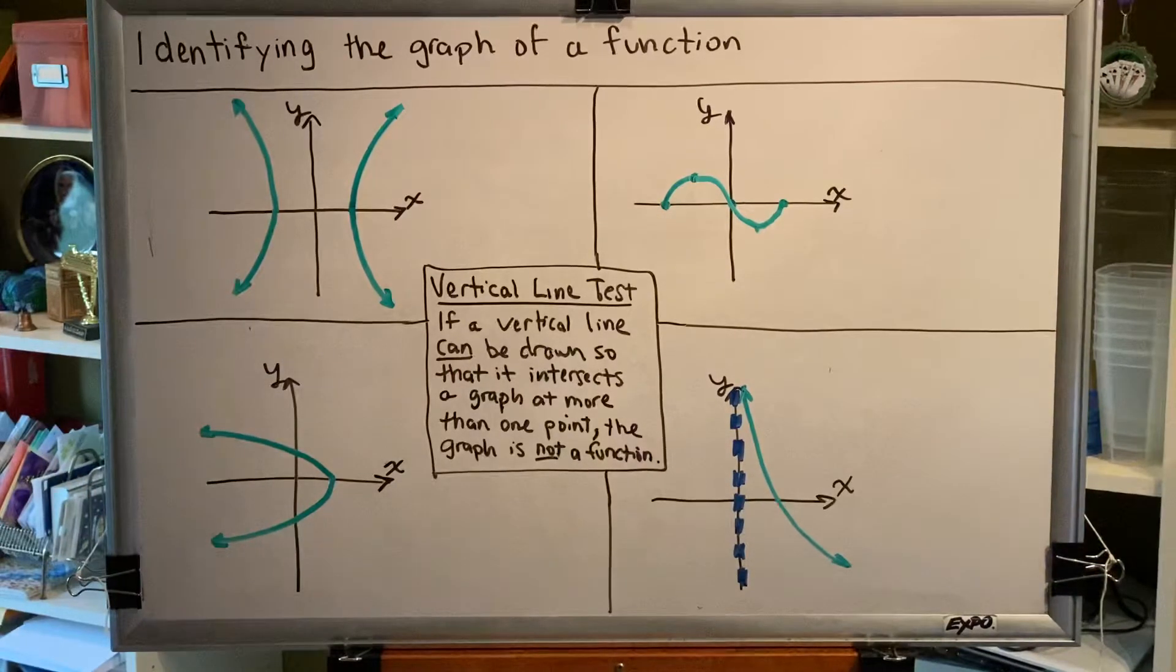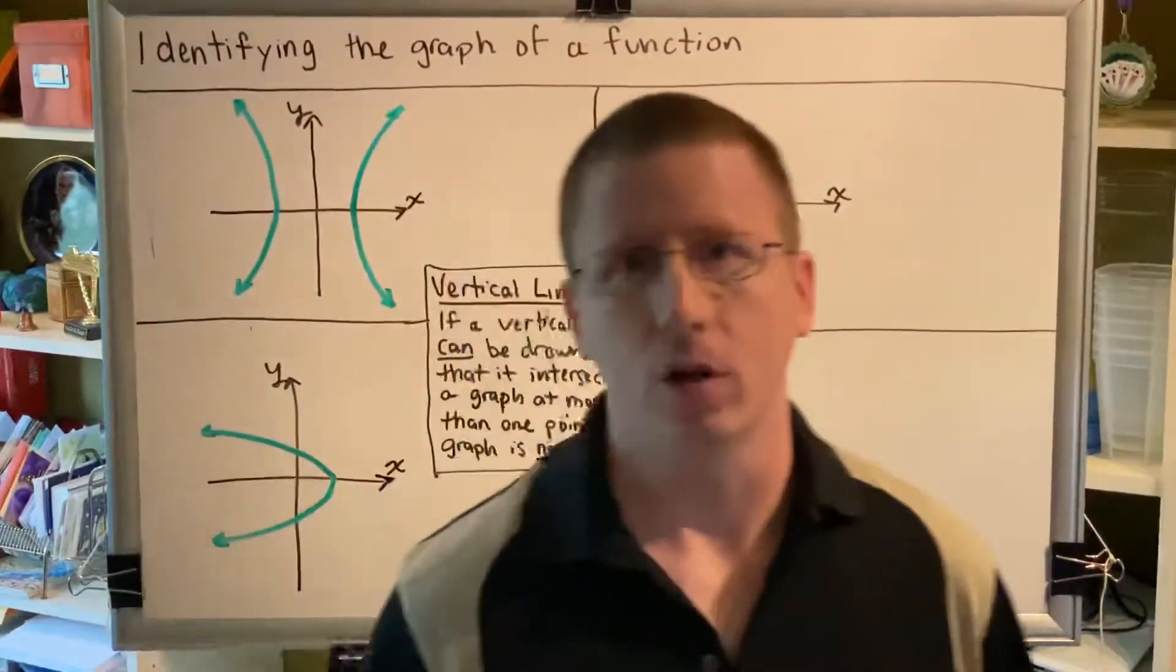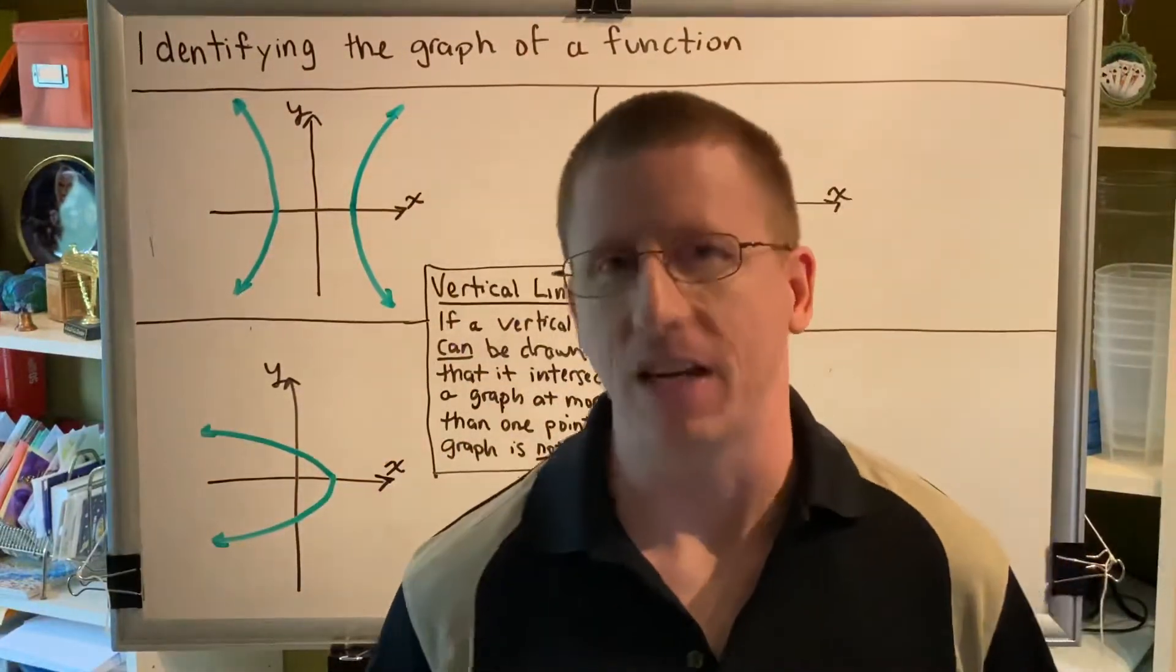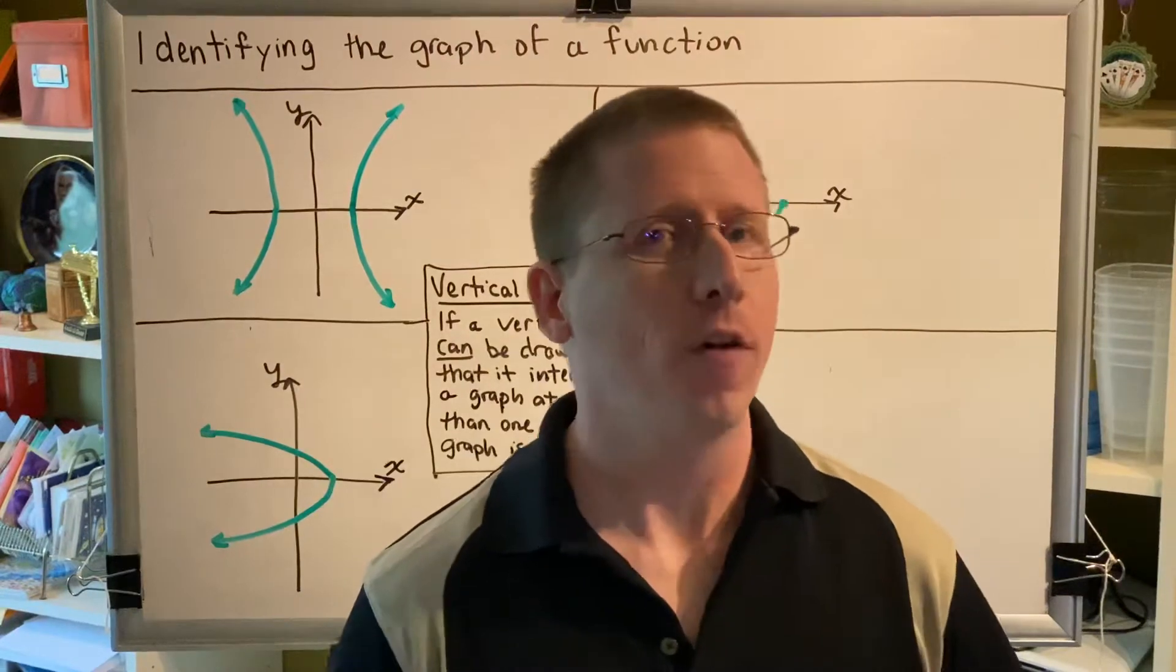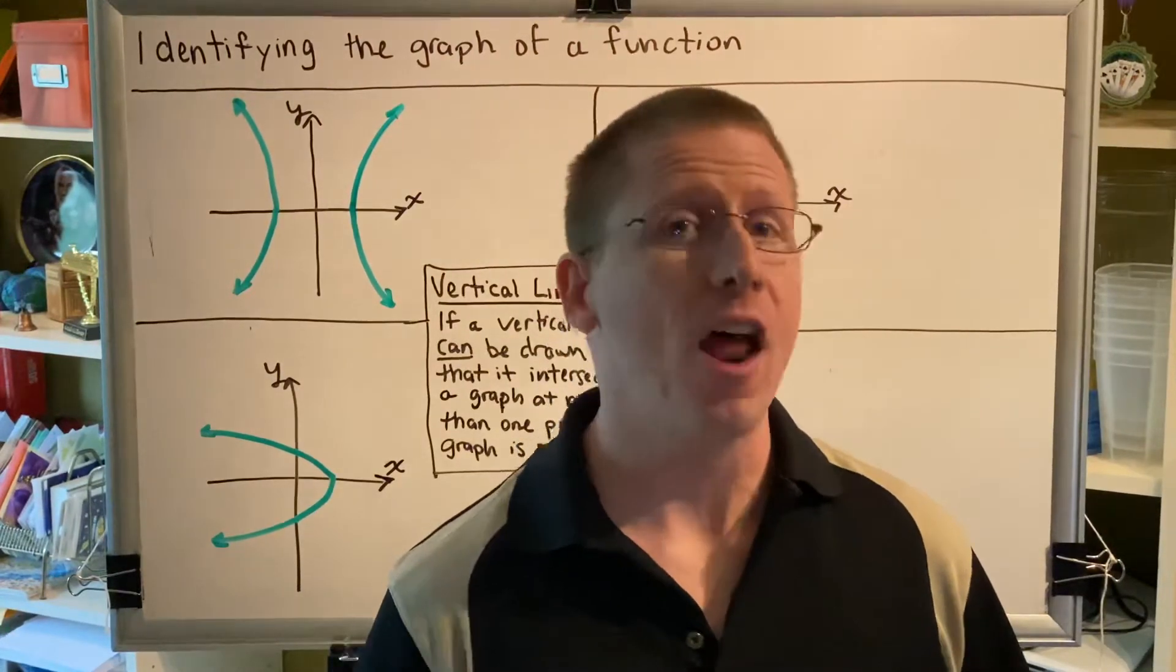The most important word in this definition is the word can. You are searching for a vertical line that has the property that it intersects the graph of the relation at more than one point.